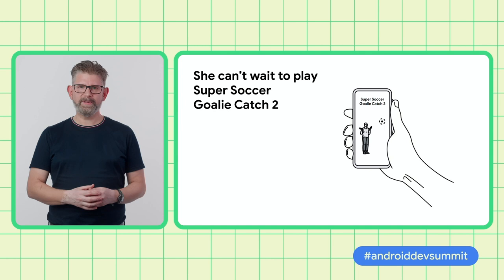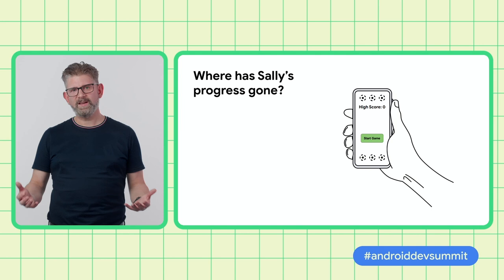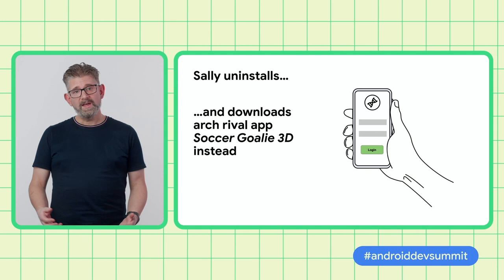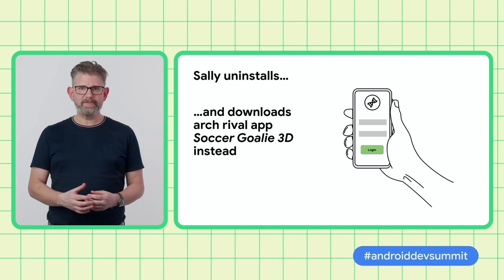Unfortunately, when she opens it, she finds that all of her progress has gone. It's going to take her days and days of playing to get back to where she was. Disheartened, Sally decides it's not worth the time to get back where she was. She uninstalls the old game and installs arch-rival app Soccer Goalie 3D.